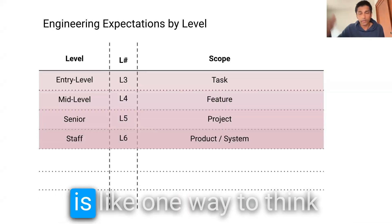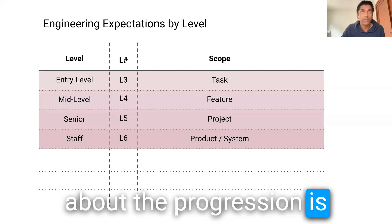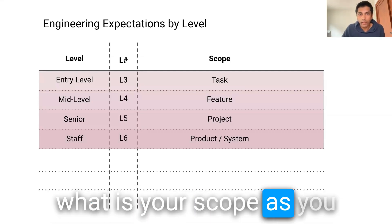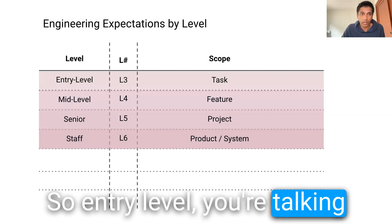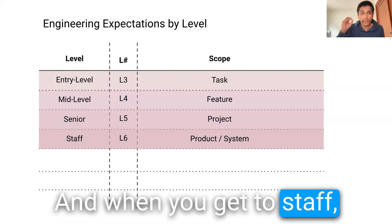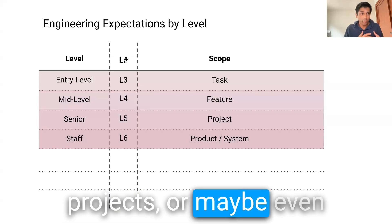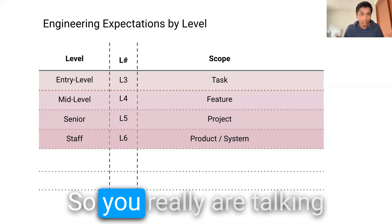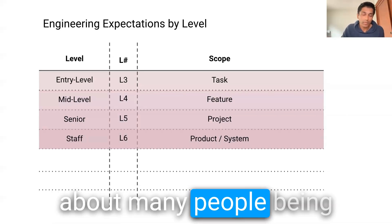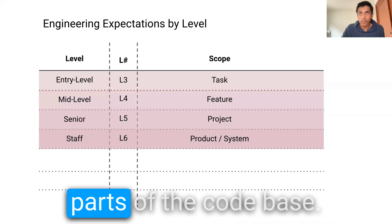There's one other thing I want to talk about here, one way to think about the progression is what is your scope as you progress the ladder, right? So entry level, you're talking about a task and then a feature and a project. And when you get to staff, you're talking about multiple projects or maybe even a whole product. So you really are talking about many people being impacted, many different parts of the code base.